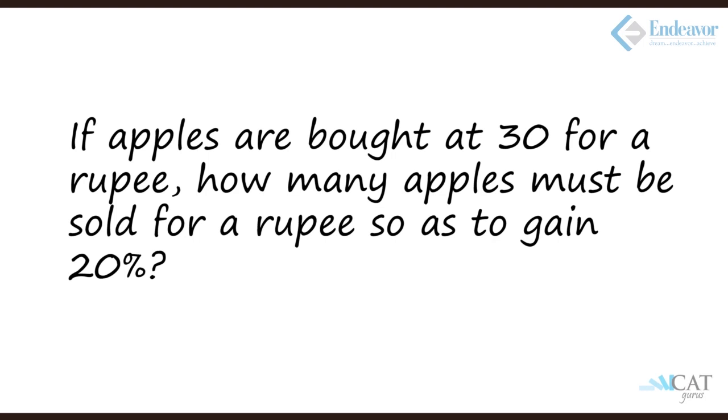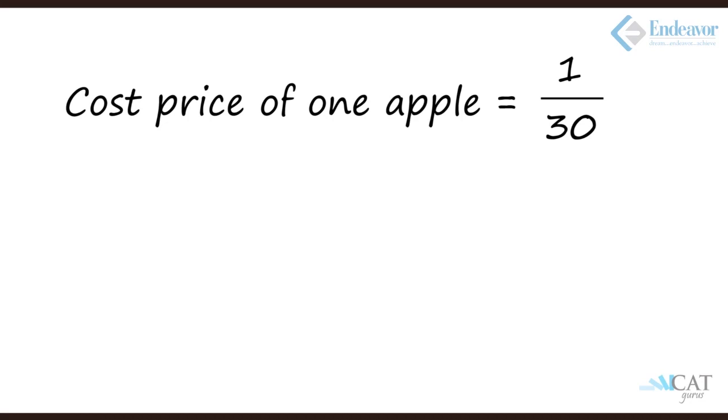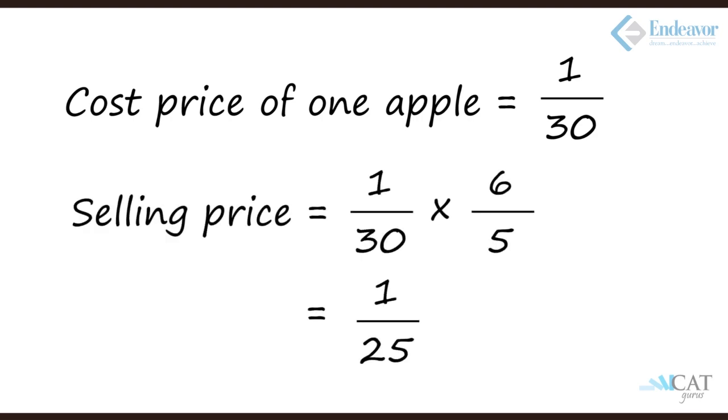apples should be sold for one rupee to gain 20% profit? Let's use the unitary method. At what price is one apple sold? One apple is sold for 1/30. What profit do we expect? 20%. So we calculate: 1/30 × 6/5 = 1/25. Now one apple is sold for 1/25, so for one rupee, how many apples will be sold? 25. Simple answer.